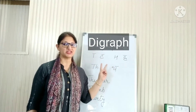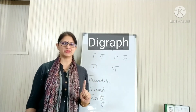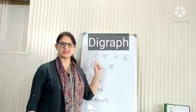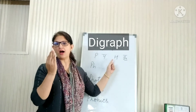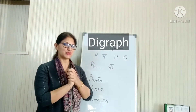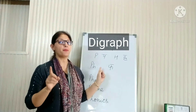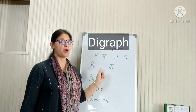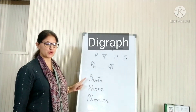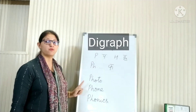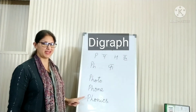Digraphs are two letters. Digraphs make one sound. For letter P, we say 'ph'. For letter H, we say 'ha'. Put the letters together, they make a new sound — Ph! Can you hear the ph sound in these words? Photo. Phone. Phonics.